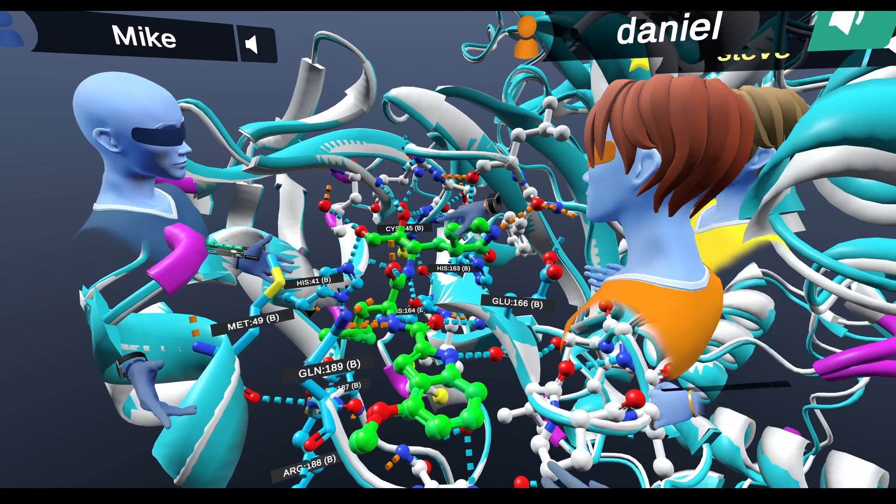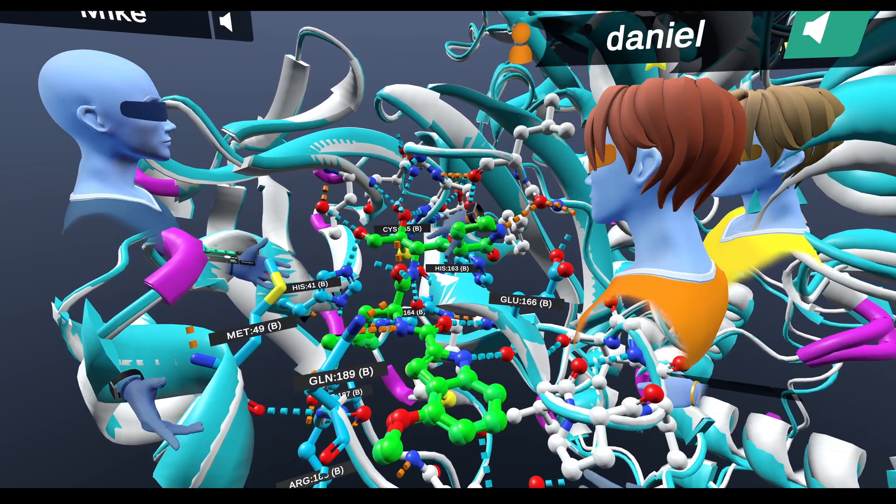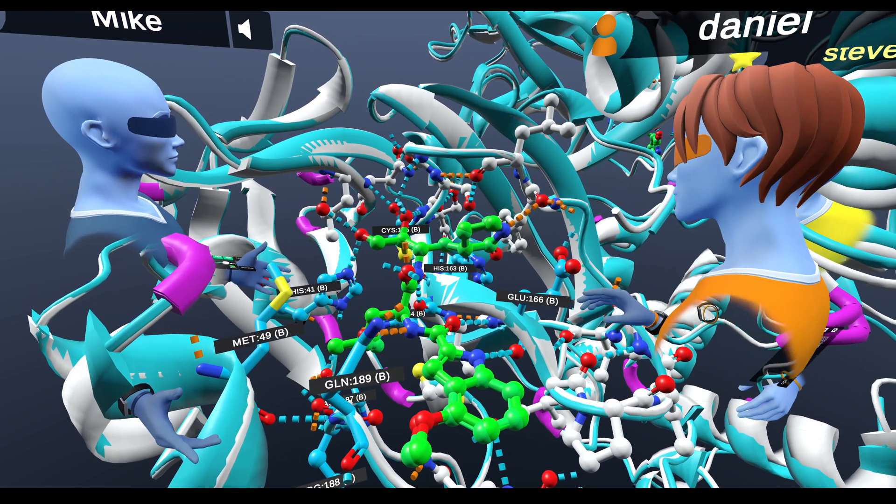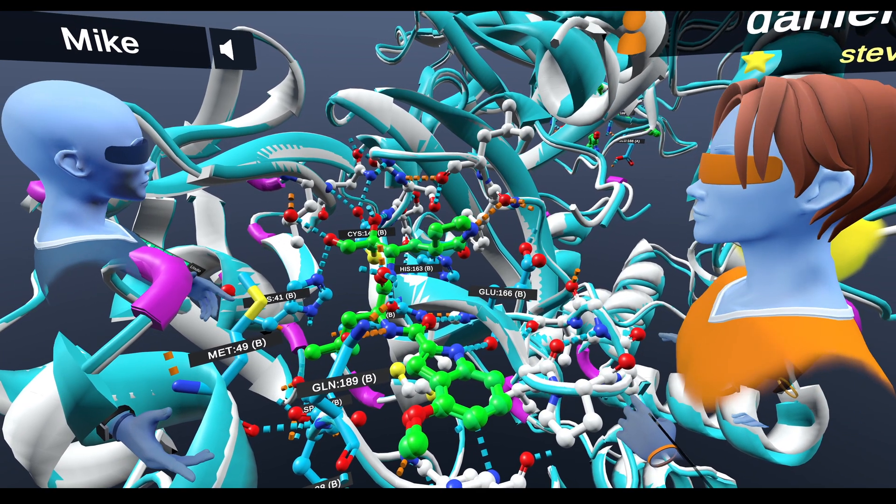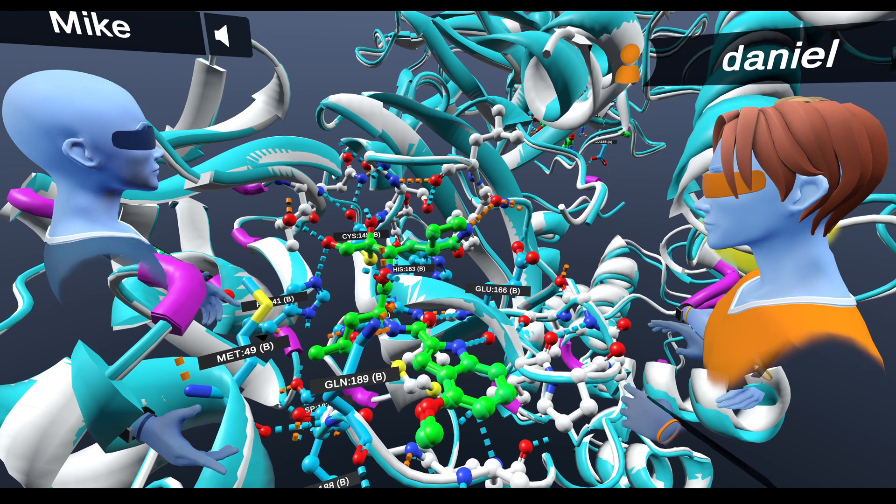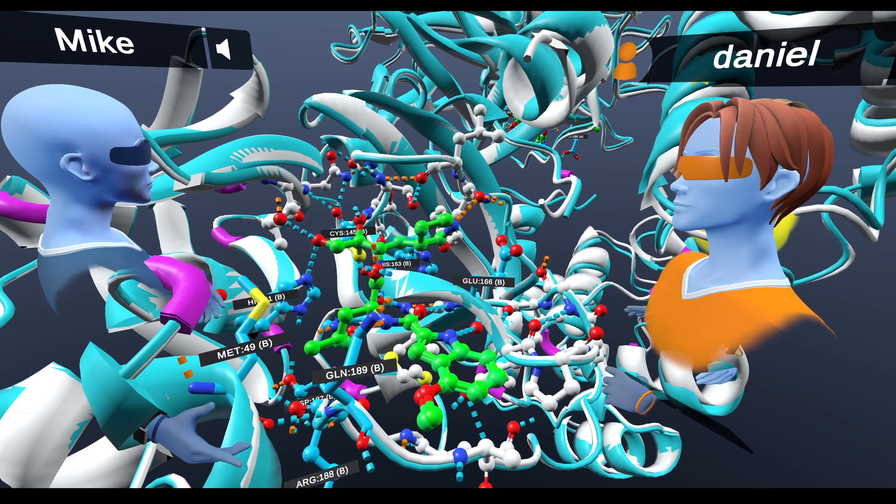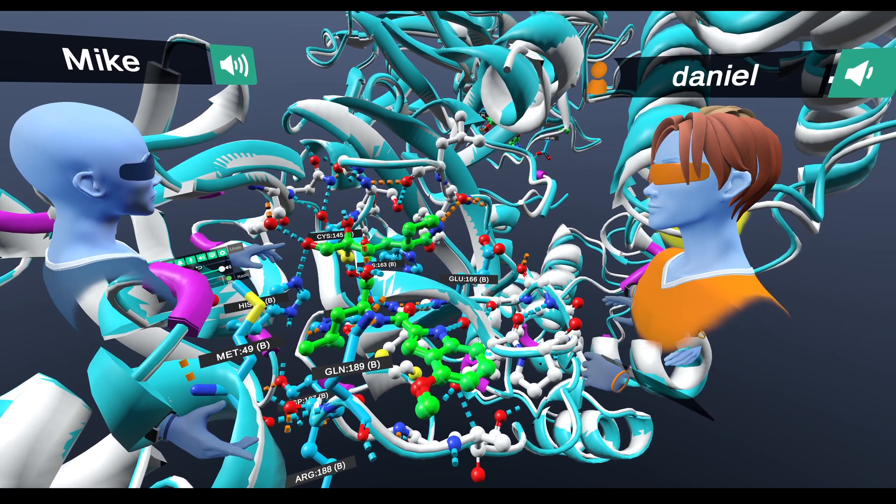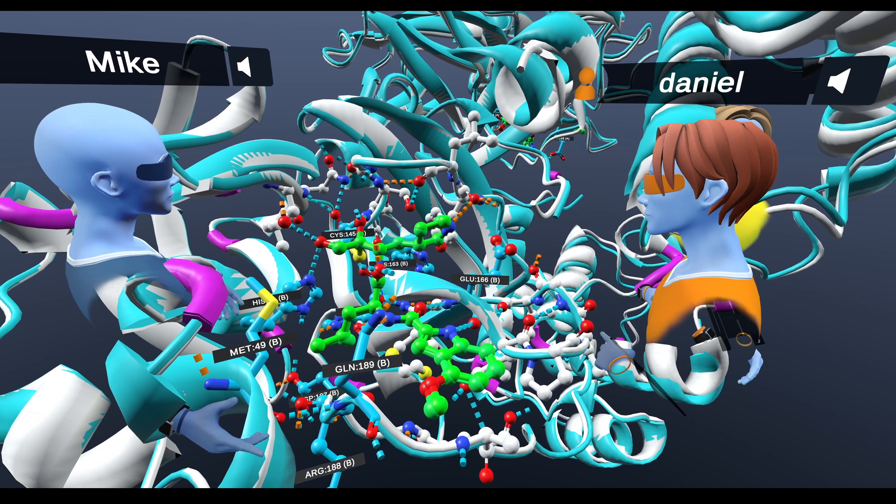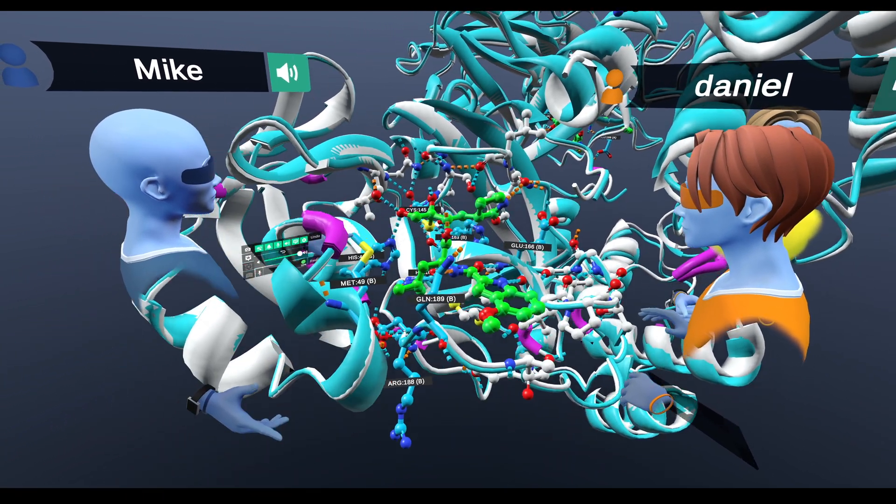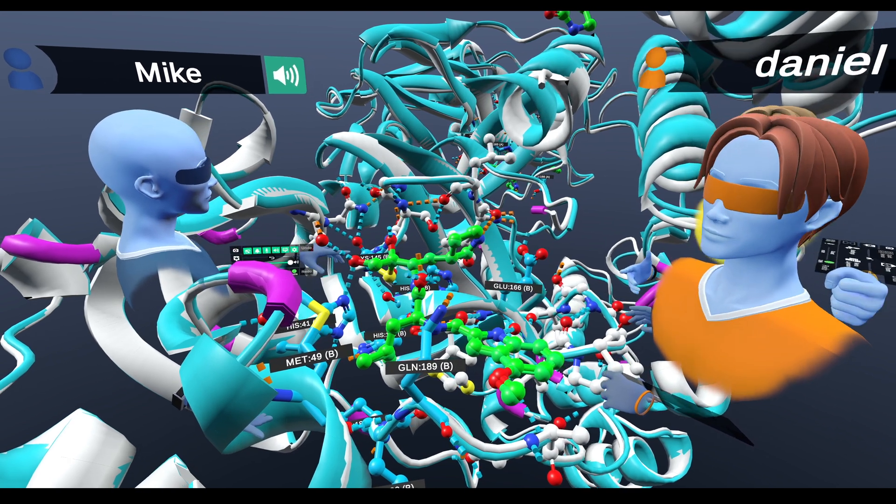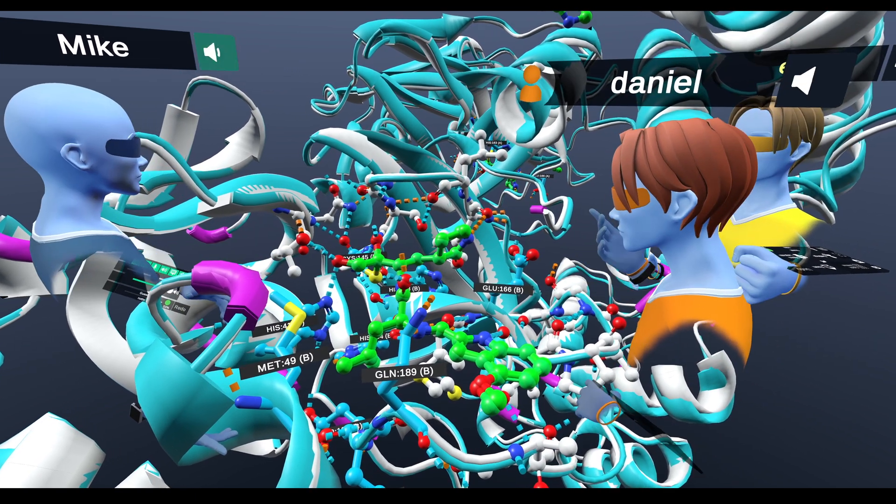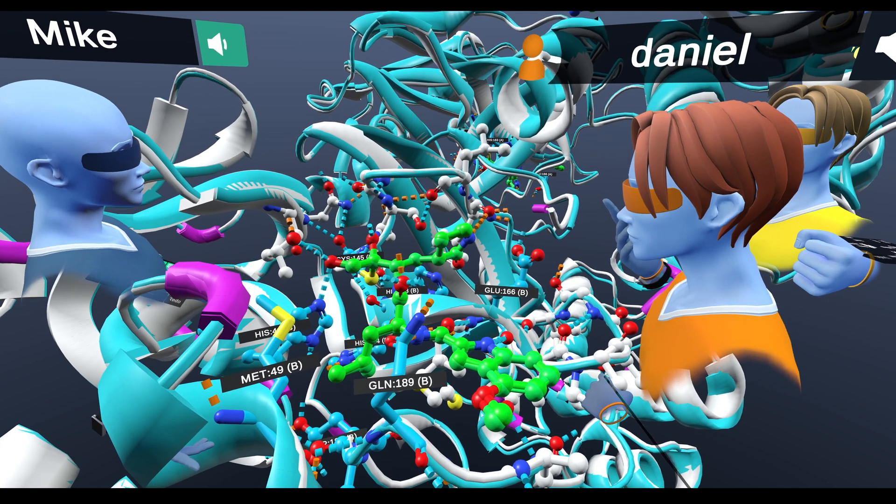Yeah. And then of course we have here the covalent bond there happening with the cysteine 145, which is part of the catalytic dyad there. So it's holding the inhibitor really tight. But I believe it's reversible, right? Yeah, it is reversible. And this alcohol here of the hydroxy ketone is also making some very nice hydrogen bonds. So it really fits well.